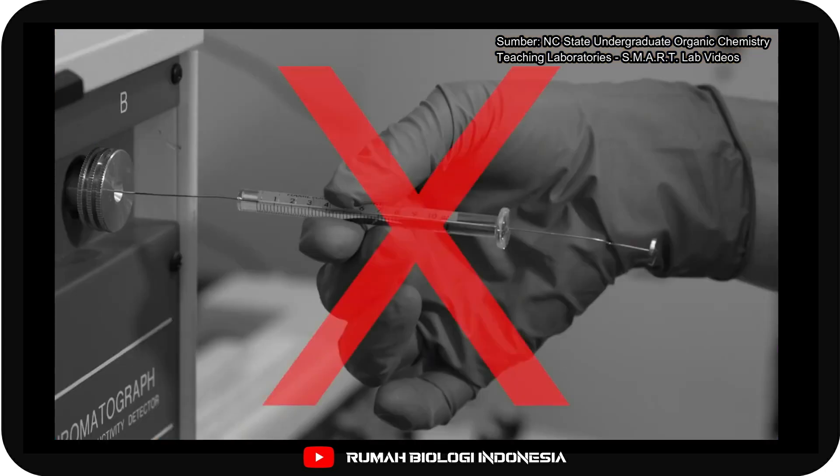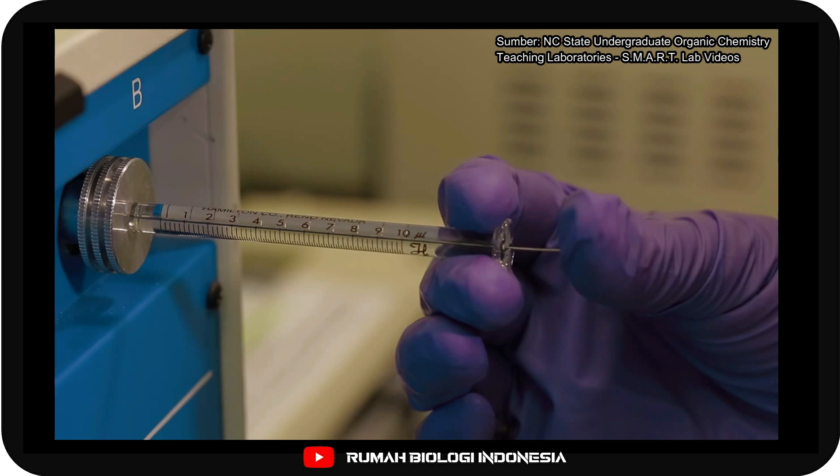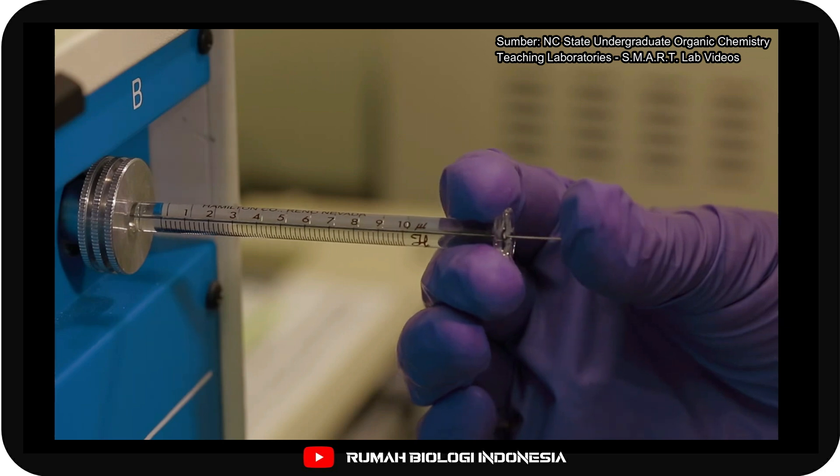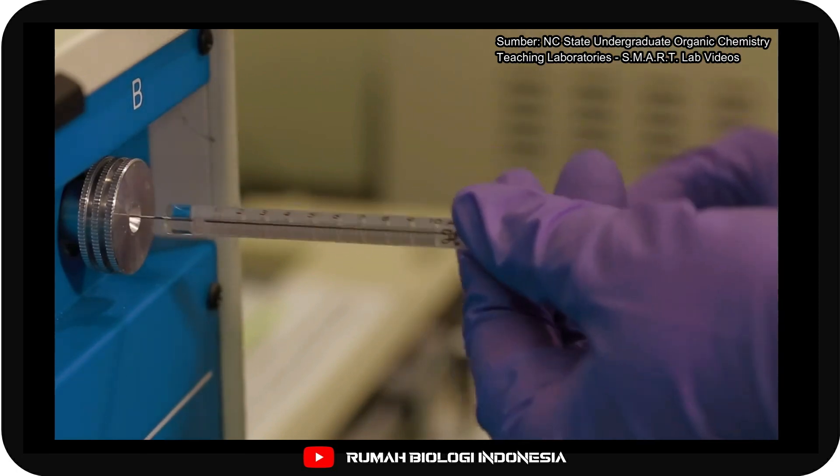Be careful not to bend the syringe. You can now inject your sample into the gas chromatograph. When you inject your sample, make sure to promptly plunge the syringe without bending it. It is necessary to ensure that the entirety of the sample is injected at one time.